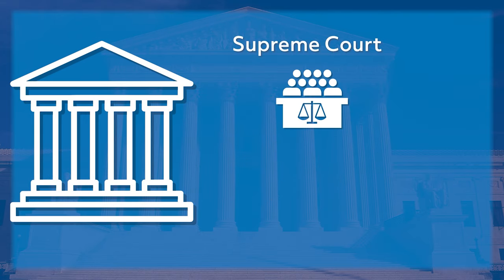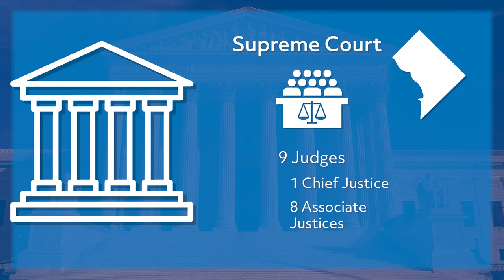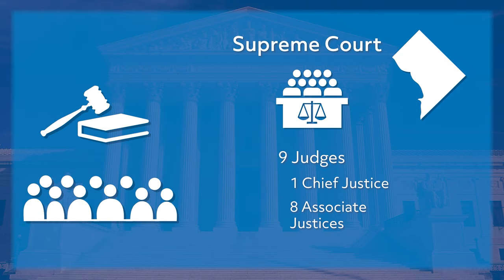Currently, the Supreme Court is comprised of nine judges who are appointed for life by the executive branch and must be confirmed by the Senate. There is one Chief Justice and eight Associate Justices. The Supreme Court is located in Washington, D.C., and you are able to visit the building and sit in on proceedings. This is done in an effort to build trust in the institution, as we're more likely to trust something that we can observe.